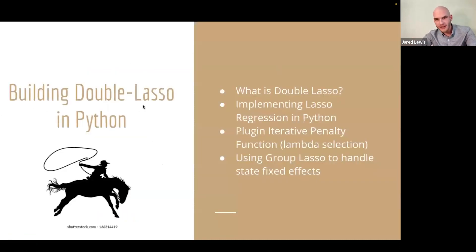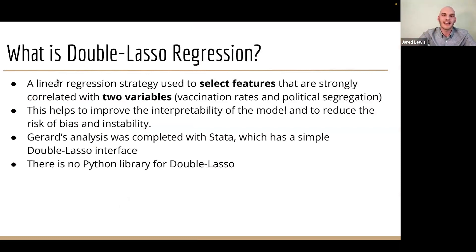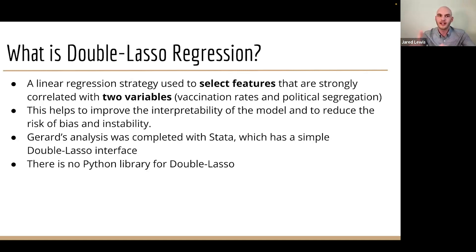Looking at double lasso, we'll first answer: what is double lasso? It is a linear regression strategy used to select features that are strongly correlated with two variables. If you remember that diagram, we're interested in selecting features related both to vaccination rates and political segregation. This helps us improve the interpretability of the model and reduce the risk of bias and instability. If we just threw all 51 controls into the model, it could be hard to interpret the results. We want a parsimonious model with the least variables possible to improve interpretability.